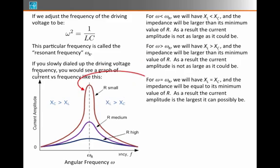But it's right at omega equals omega R that will have XL equals XC. They cancel each other in the impedance, and the impedance takes on its minimum possible value of resistance. As a result, the current amplitude will be the largest it can possibly be.